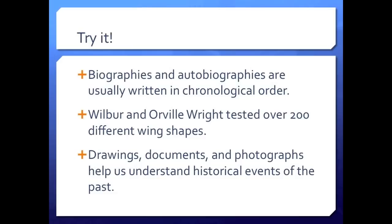Now let's look at the last one. 'Drawings, documents, and photographs help us understand historical events of the past.' What's the compound subject in this sentence? This sentence has three subjects: drawings, documents, and photographs. You have to have two or more subjects for it to be considered a compound subject. In this case, since there are three, we separated them with commas, and before the final subject we added the conjunction 'and.'